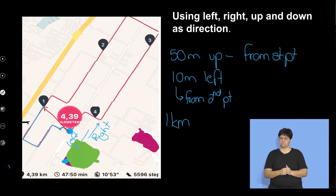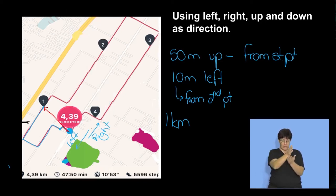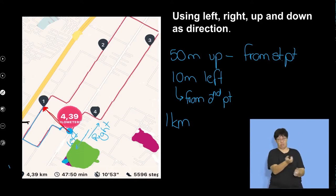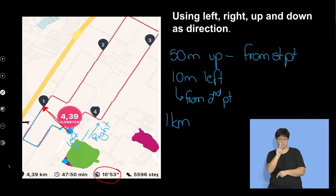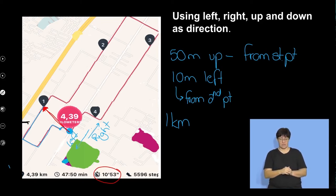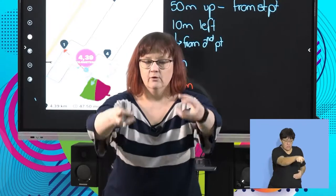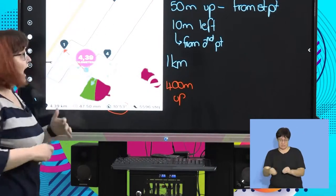Her displacement is probably about 400 meters. If she could have walked in a straight line from start to that point, she would only need to do 400 meters. That would have been much faster than the one kilometer walked. That straight-line path — the red one — is the displacement, and I would describe it as 400 meters upward from her starting position.